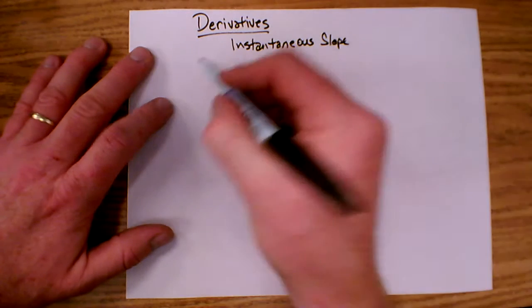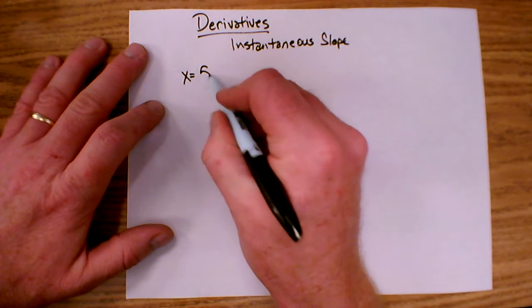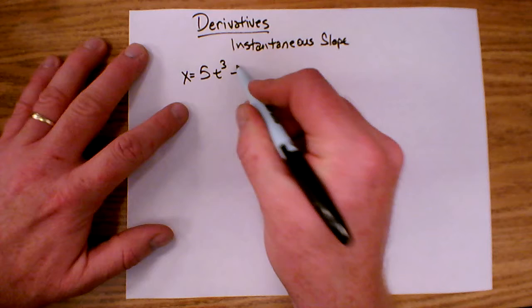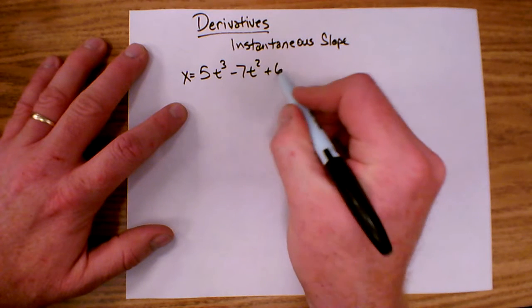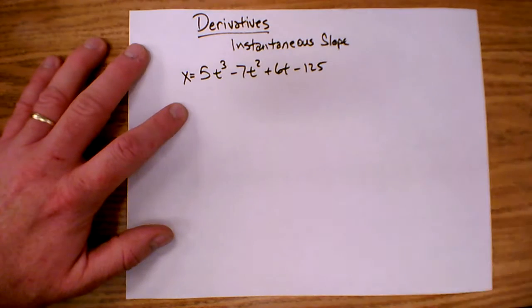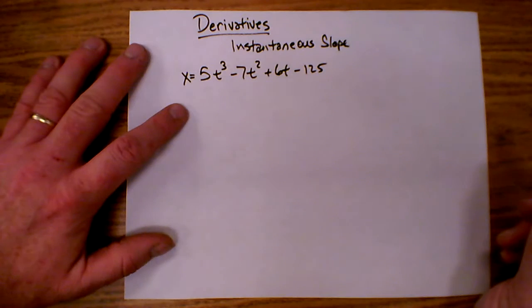So if I have a function like x equals 5t to the third minus 7t squared plus 6t minus 125, for example, and I want to find the derivative of this function.